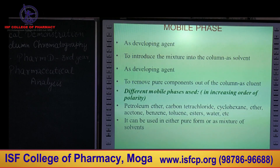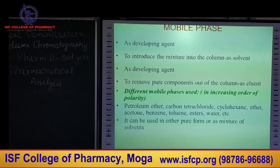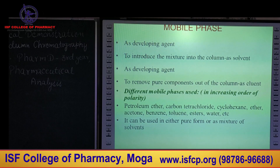The mobile phase acts as a developing agent. It is used to introduce the mixture of components into the column and it acts as an eluent for the elution of pure components. Different mobile phases can be used in increasing order of polarity: petroleum ether with the lowest polarity, then CCl4, cyclohexane, ether, acetone, benzene, toluene, esters, and water which has the highest polarity. They can be used in pure form or as a mixture of one or two solvents.